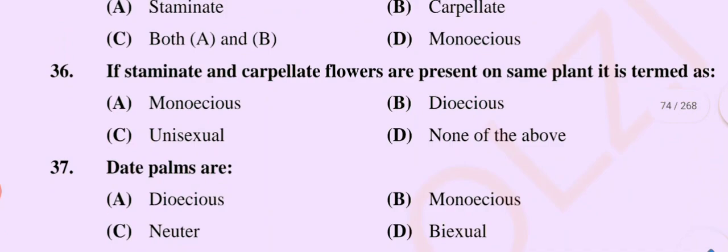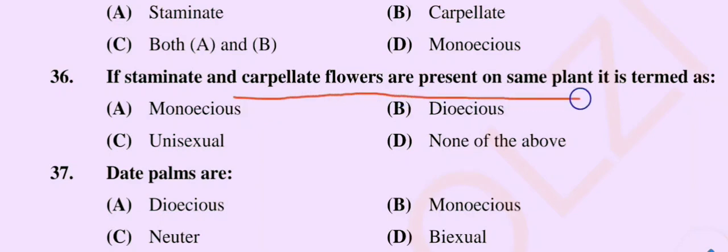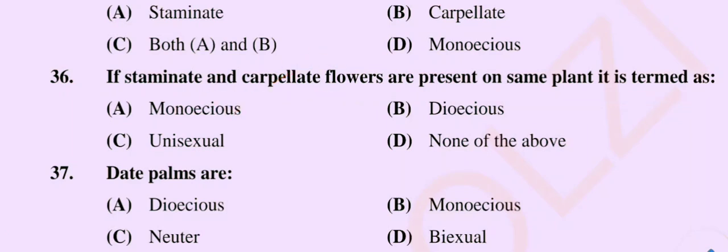Question number 36: If staminate and carpillate flowers are present on the same plant, it is termed as — option A monoecious, option B dioecious, option C unisexual, option D none of the above. The correct option is option A: monoecious.